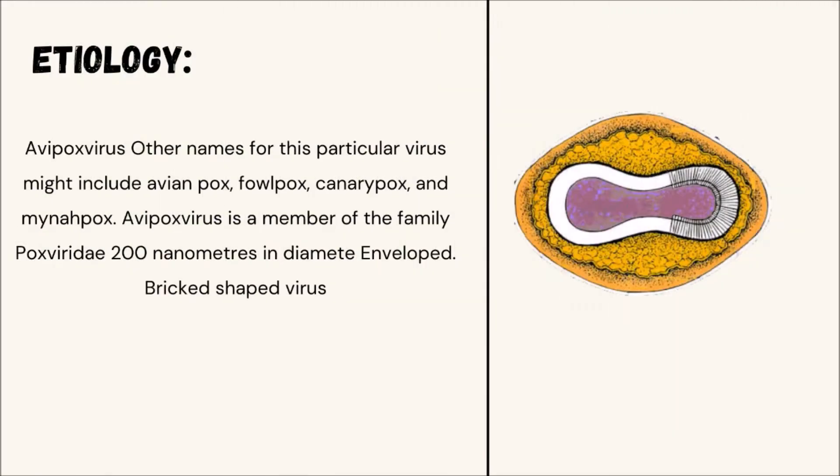Etiology: Avian Pox Virus. Other names for this virus include Avian Pox, Fowl Pox, Canary Pox, and Minopox. Avian Pox Virus is a member of the family Poxviridae. It is 200 nanometers in diameter, enveloped, and brick-shaped.